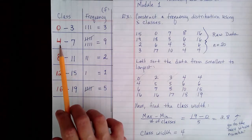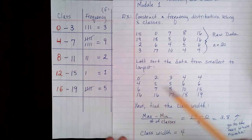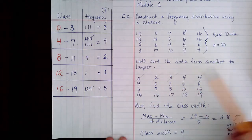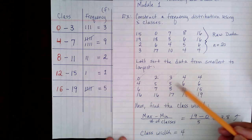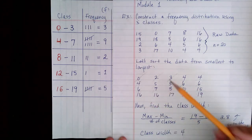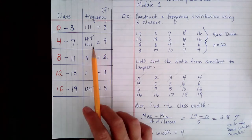The number of data between 4 and 7, we can count. There's 1, 2, 3, 4, 5, 6, 7, 8, 9 data. So I've written that down already.